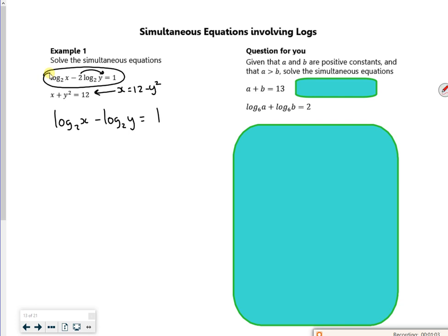So if I write that as x equals 12 minus y squared, I can replace the x with a 12 minus y squared. Now everybody tries to replace the y with things in terms of x's, but it makes no difference. So now I've got log 2 of 12 minus y squared minus log 2 of y is equal to 1.